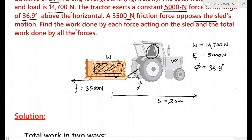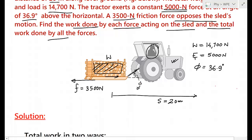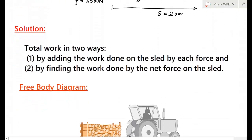We need to find the total work done by each force acting on the sled and the total work done by all forces combined. We will use Method 1 first — calculating work done by each individual force and summing them — and then verify using Method 2, which uses the net resultant force multiplied by displacement.